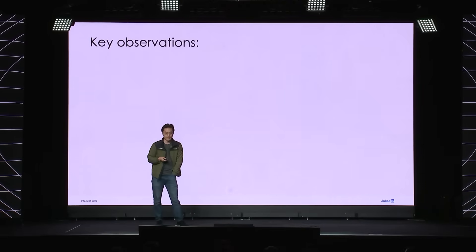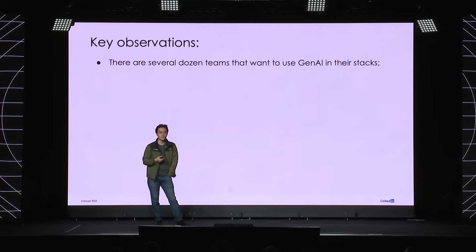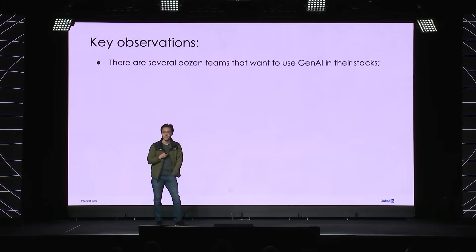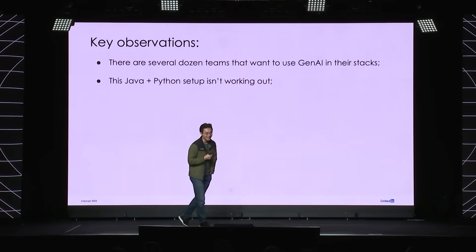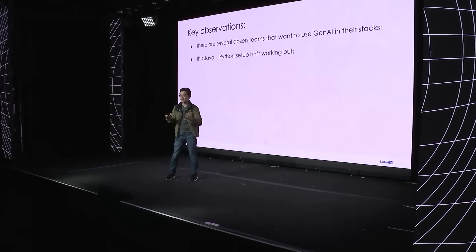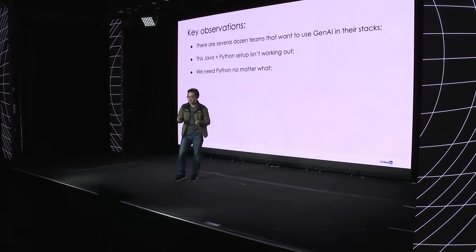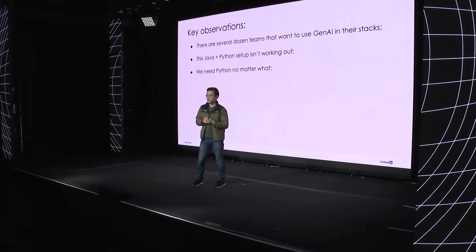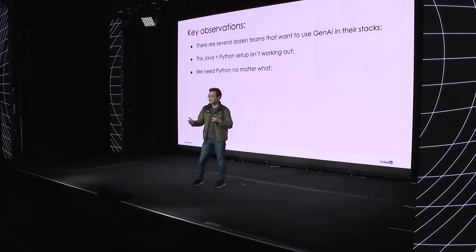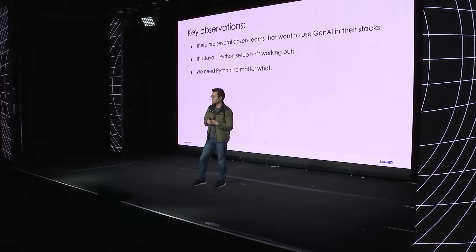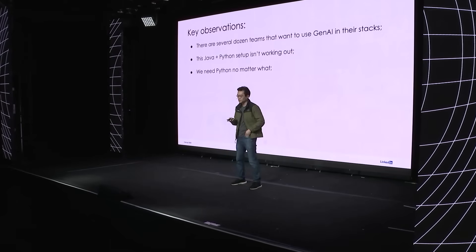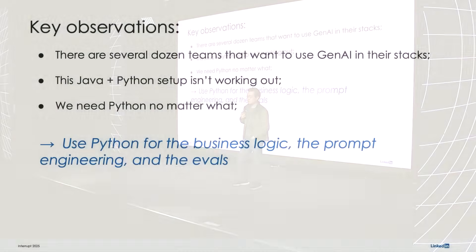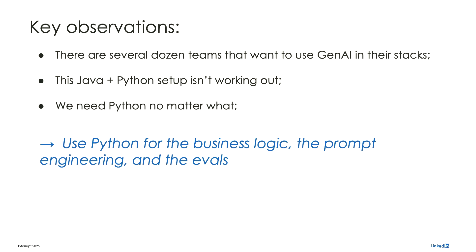So we took a step back and made a couple of key observations. First, there's undeniable interest across the company from teams in all different verticals wanting to use Generative AI. We noticed that for Generative AI specifically, the Java-Python setup really wasn't working out. And we realized we had to use Python no matter what — because we have to stay on top of the latest industry trends. So we made a bold bet: let's use Python for the business logic, the engineering, the evals, and pretty much everything else needed to build a functional production application. And we even took the next step further — let's build a framework and make it the default, so teams don't have to guess about the right way to do things.